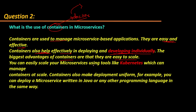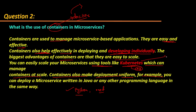You can easily scale your microservice using tools like Kubernetes, which is a container management tool — essentially a Docker management tool that can manage containers at scale. Containers also make deployment uniform. For example, you can deploy a microservice written in Java, Python, .NET, or any other language in the same way. Kubernetes understands the language of containers, not the language of Python, Java, or Ruby — whatever language you are using.